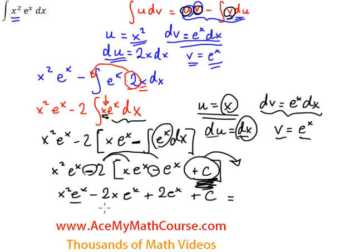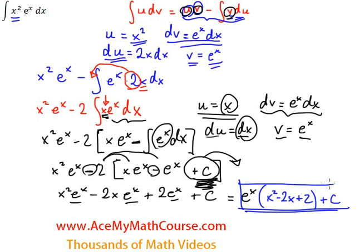Great, now I guess I'll just factor out the e to the x. Change color again just for fun. e to the x outside so we get x squared minus 2x plus 2 plus c at the end, and that is our final answer. That's it.